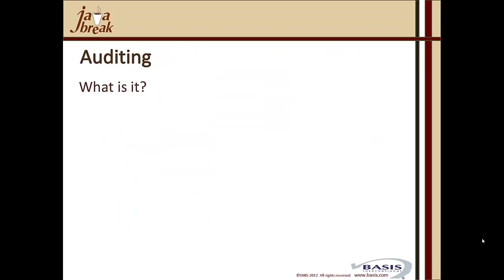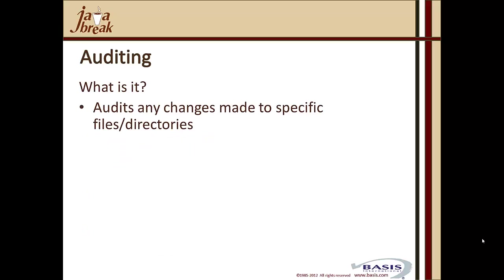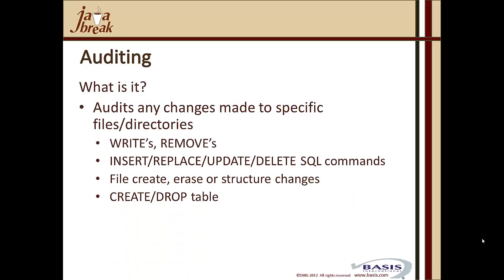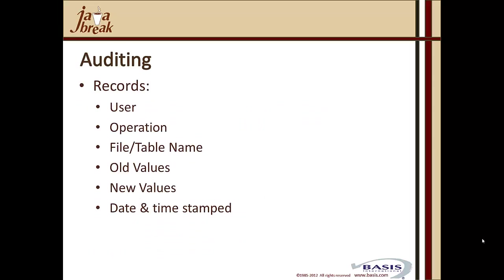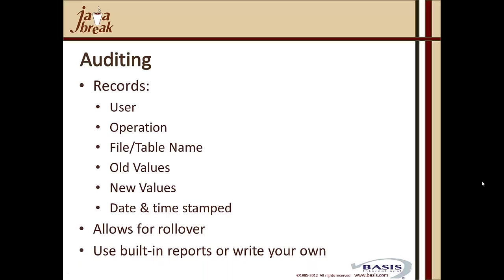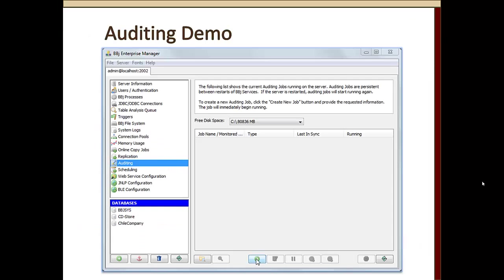Now let's talk about the new facility called Auditing. It audits any changes made to specific files or directories you select: writes and removes; SQL insert, replace, update, or delete commands; creating or erasing a file; structural changes such as adding a key to a VKeyed file; or SQL create/drop table commands — all logged in the audit. Completely transparent to users and a low-level operation. It creates a BASIS ESQL audit database. Records include the user, the operation performed, the file and table name, old and new values, all date- and time-stamped. It allows rollover of the audit database, and you can use built-in Enterprise Manager reports or write your own.